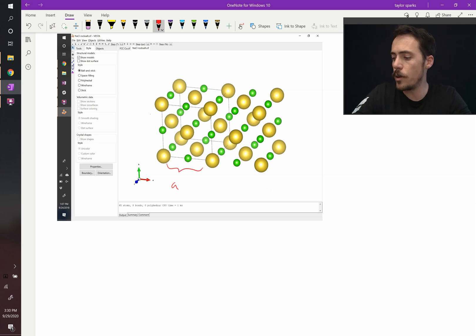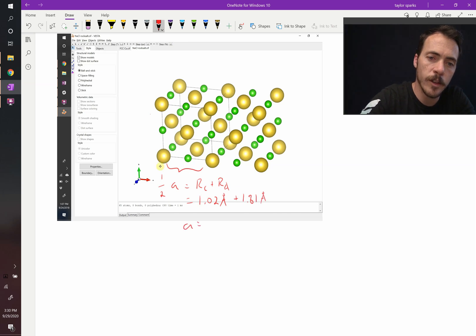So I looked up the values of those radii. Sodium, its ionic radius is 1.02 angstroms. So one half of A is equal to RC plus RA, and that's equal to 1.02 angstroms plus 1.81 angstroms. When we plug those in, we find out that the lattice parameter for rock salt is equal to, I get that it's about 5.66 angstroms.